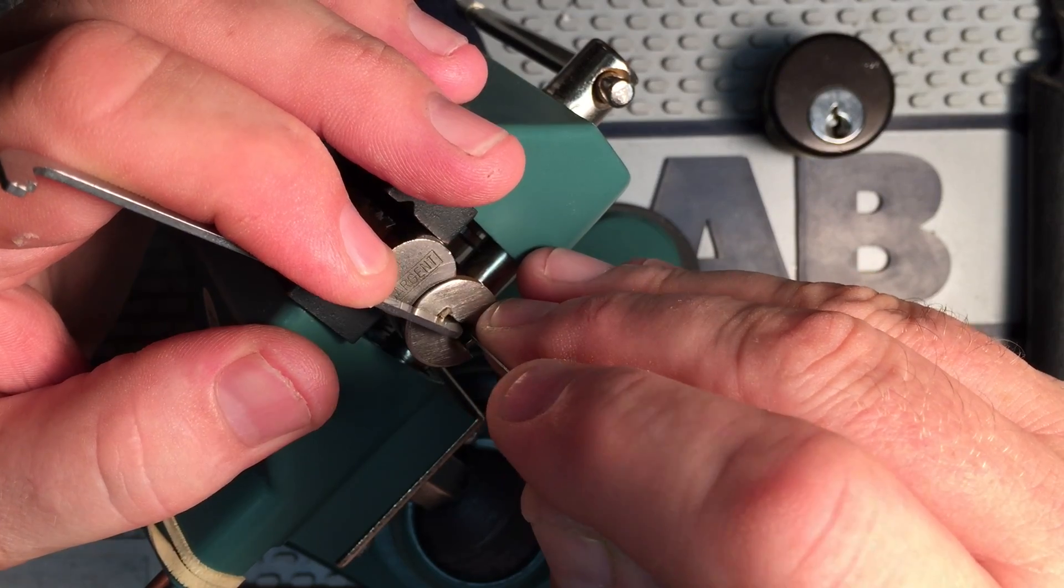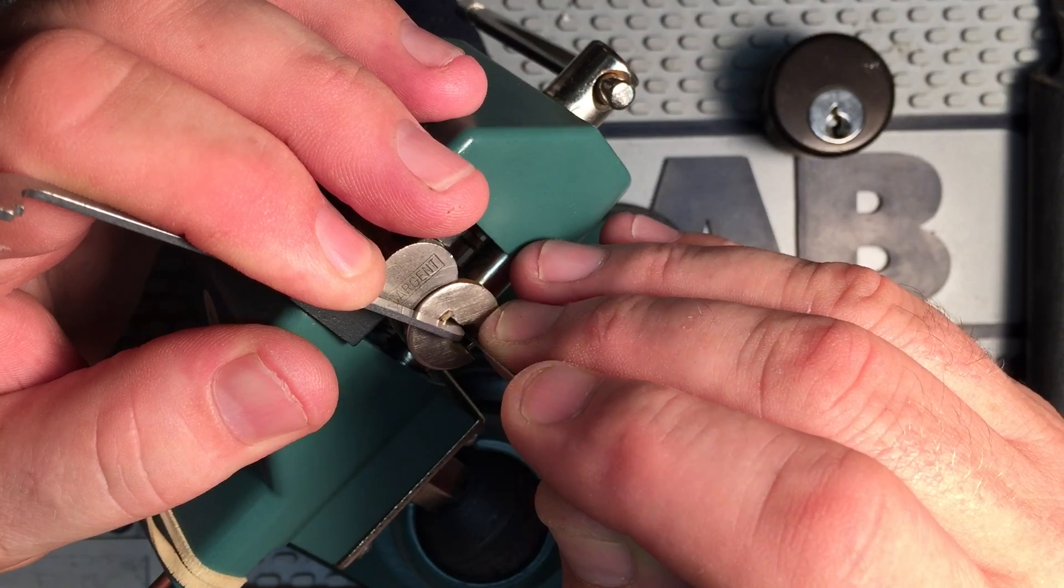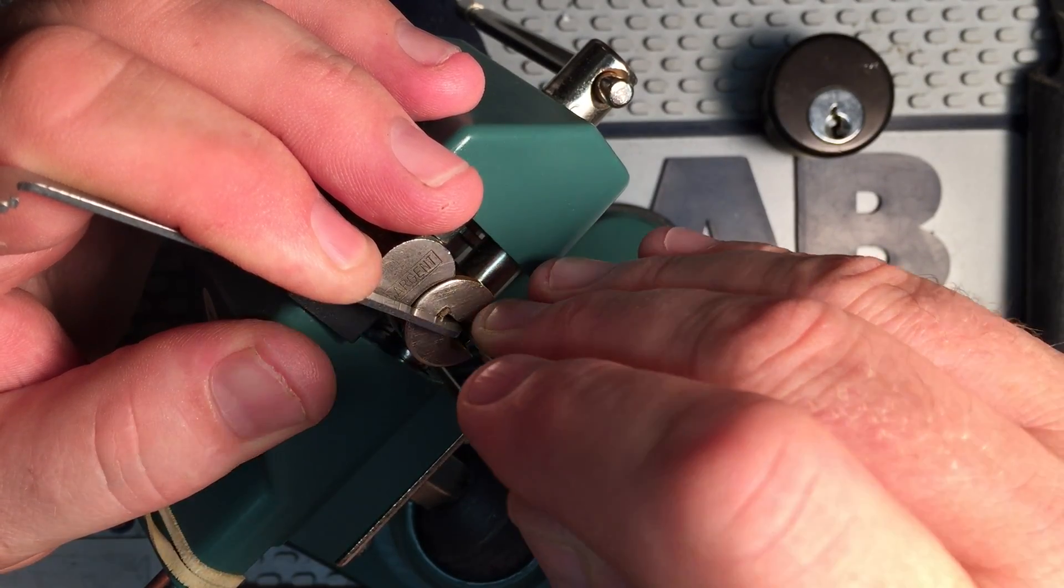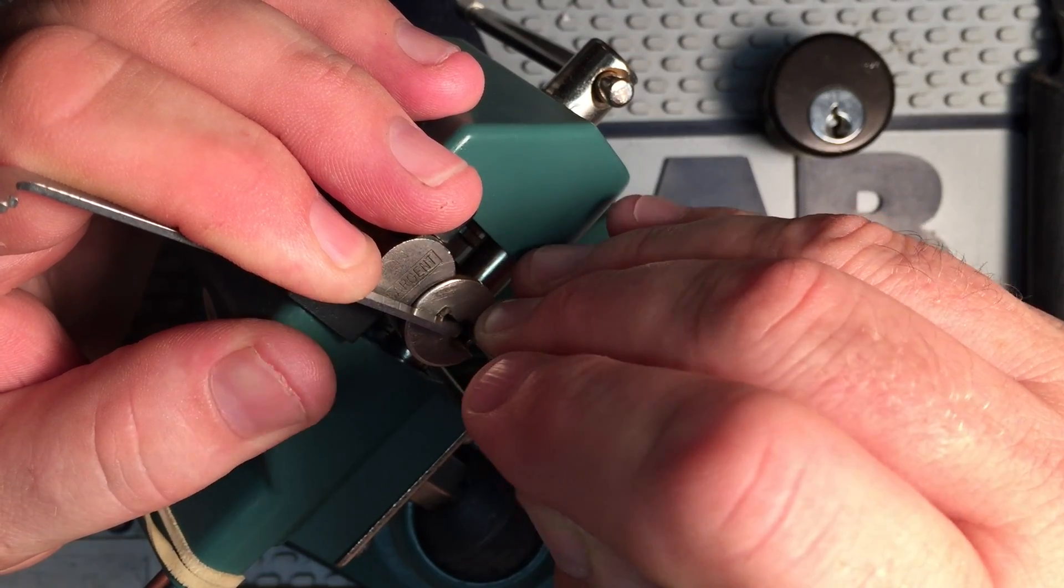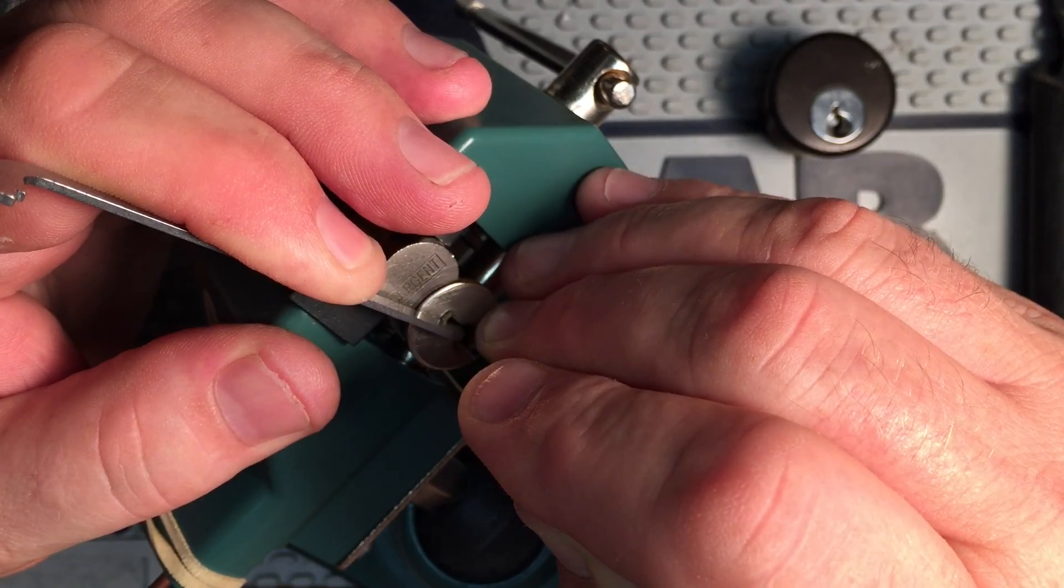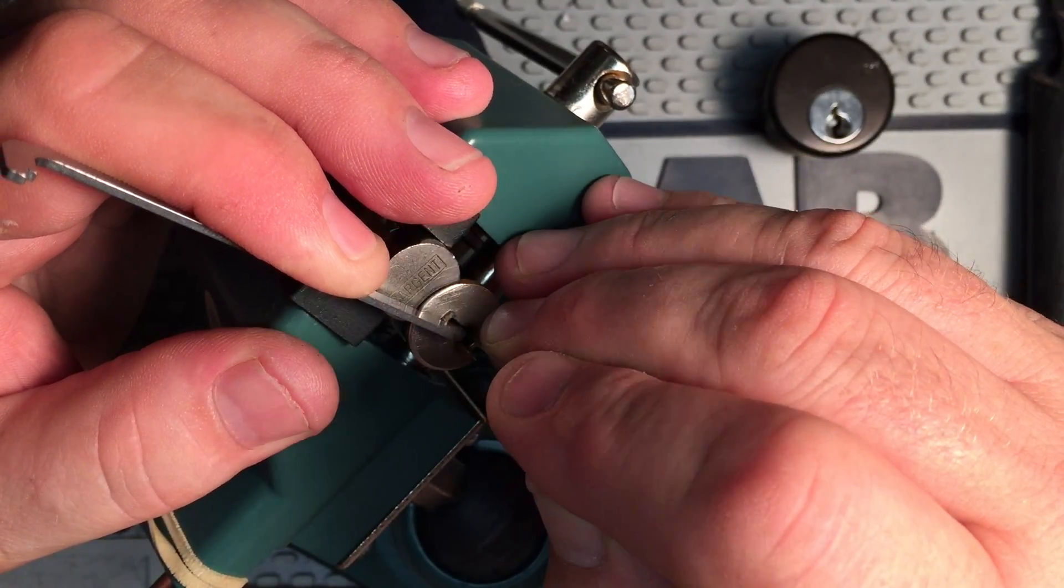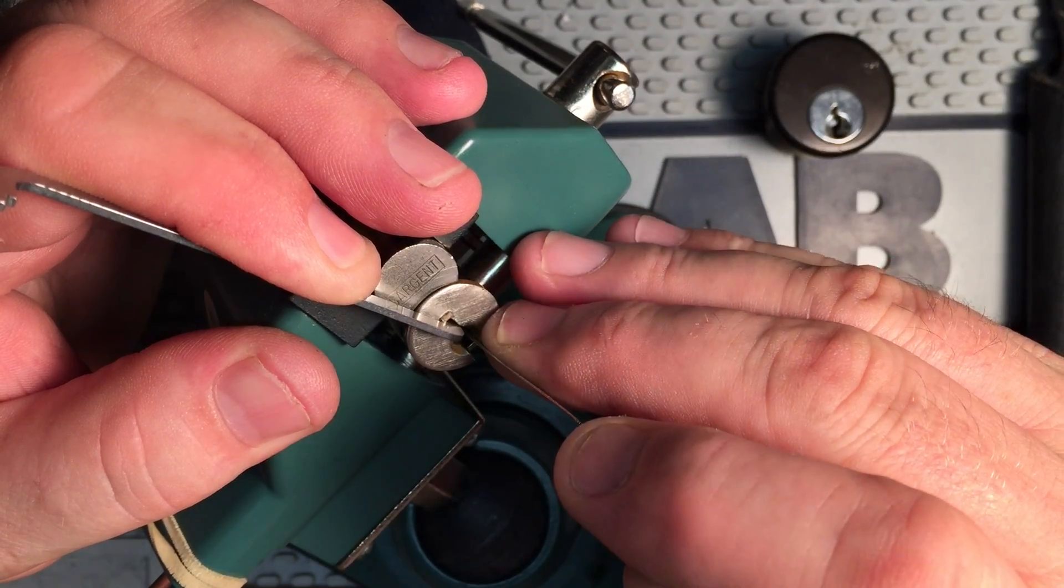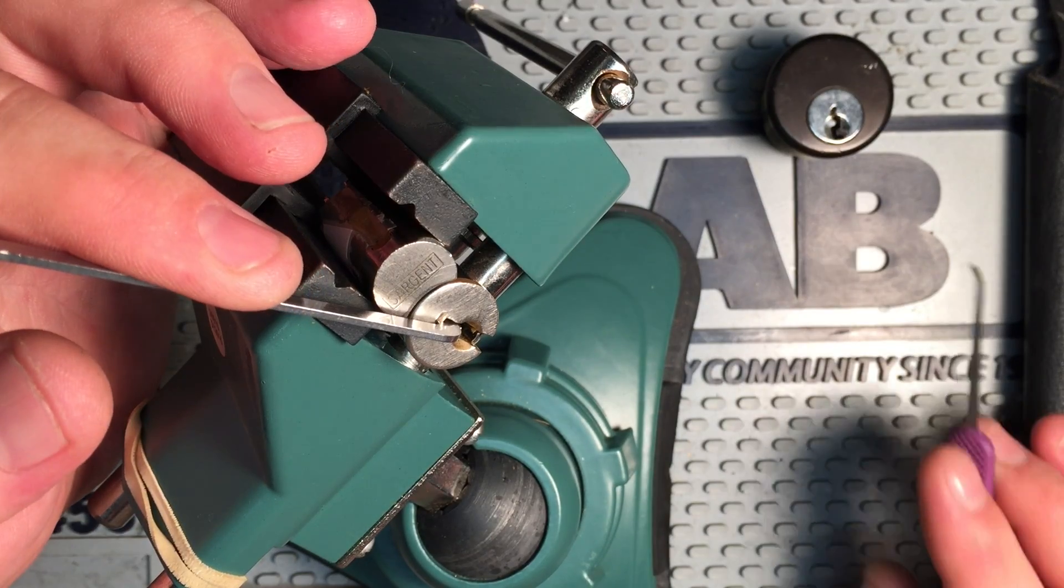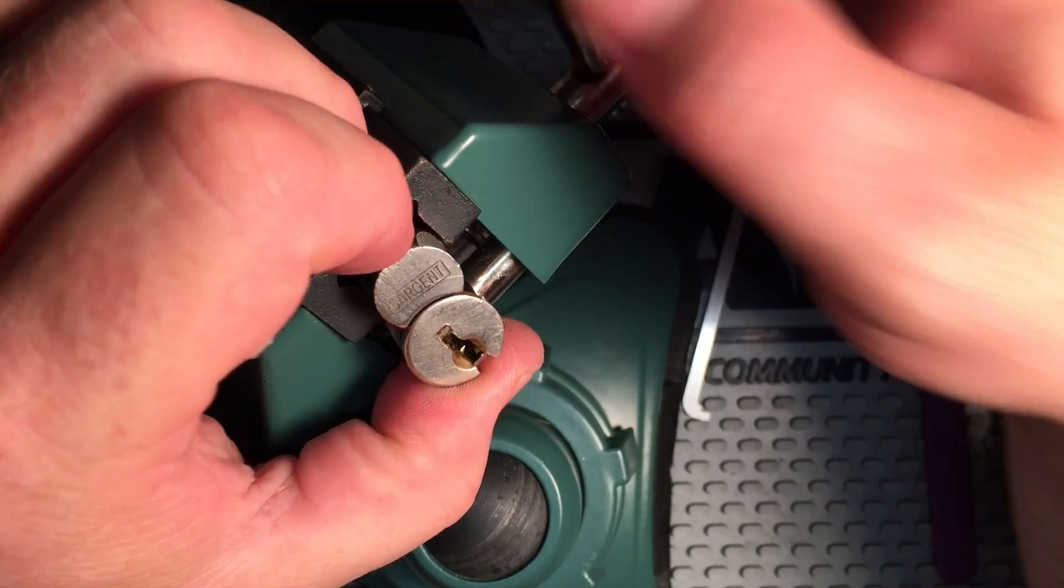And so what really differentiates the shear line that your lock picks on is the pin that you start with and the tension. And so in this case, this lock favors the operating control line when I start off with pin six and the control shear line when I start off with pin four, I believe. And so wanting to pick it to control, I just start off with pin four and apply heavier than average tension.